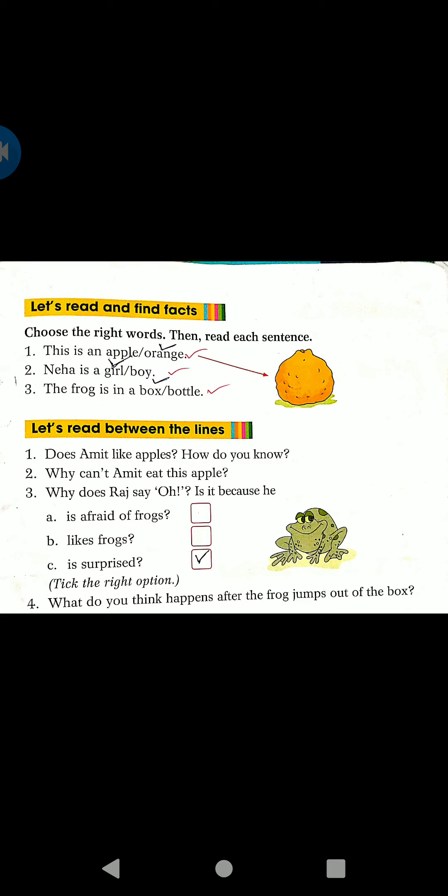Next one, question number 3. The frog is in a box or bottle. According to our lesson, when Raj opens the box a frog jumps out of it. So what is the correct answer here? It is box. Tick the right answer as box.